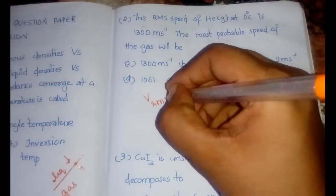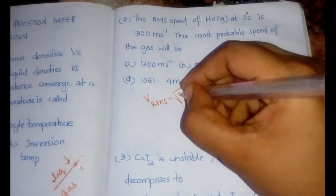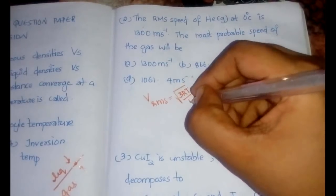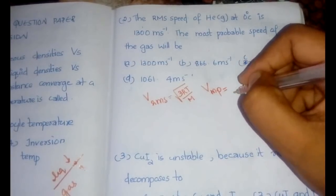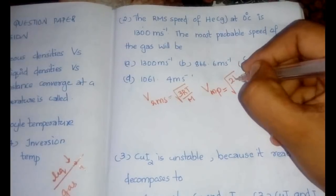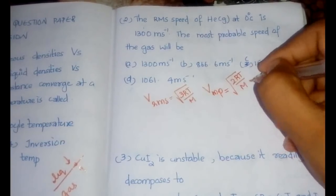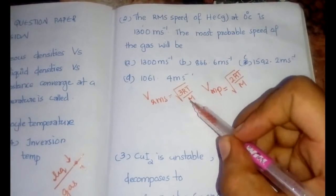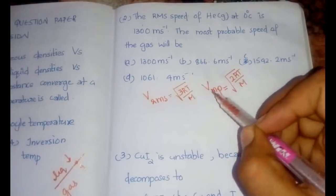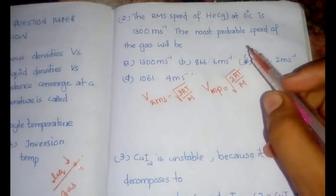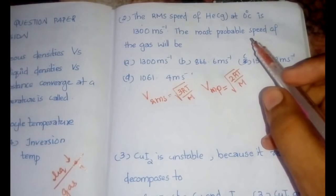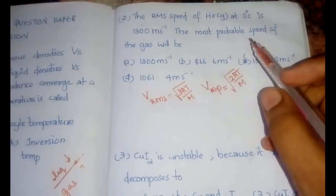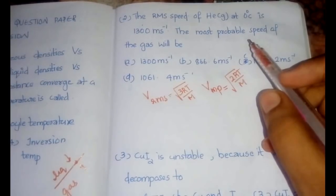The equations are: v_rms = √(3RT/M) and v_most probable = √(2RT/M). We can substitute all values and find the answer, or use a simpler method. When I covered the gaseous state, I already gave you the ratio between RMS velocity, most probable velocity, and average velocity.